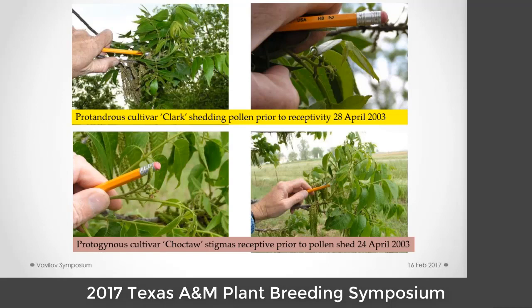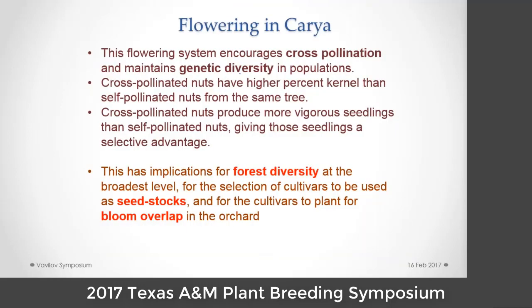Mahan is the only cultivar we know that is homozygous dominant, so all of its progeny are protogynous. If you look at Clark, it's a protandrous cultivar and the catkins shed pollen first. That's prior to pistillate receptivity. We measure pistillate receptivity by adherence of pollen when checking the stigmas. In the lower group, the protogynous Choctaw has retained pollen on the stigmas and yet hasn't begun to shed pollen from the catkins. This system encourages cross-pollination and maintains genetic diversity in populations.